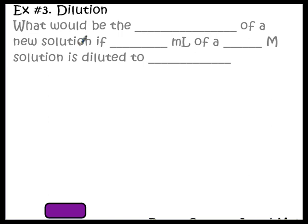Here's a question for us. What would be the molarity of a new solution if I took 250 milliliters of a 12 molar acid solution and I diluted it to 1000 milliliters or a liter? So I'm going to take this very concentrated solution, 12 molar, and I'm going to take a little bit of it and dilute it down to make a lot more of it, but it's not going to be as concentrated.